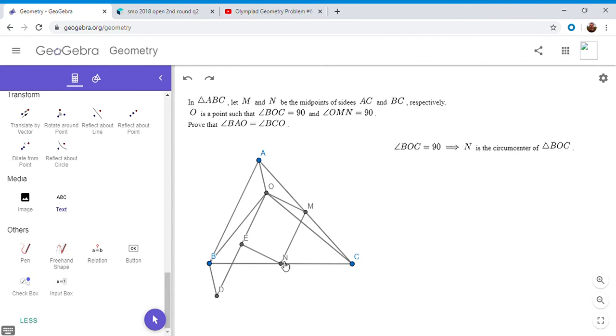So note that EN is perpendicular to OD, but OD is parallel to AB, and AB is parallel to MN, because MN is a mid-segment of the triangle ABC. So we have DO is parallel to AB is parallel to MN. So since NE is perpendicular to DO, NE also has to be perpendicular to MN.